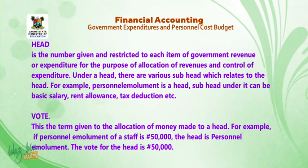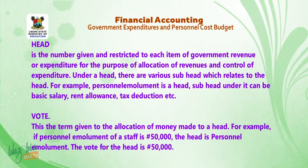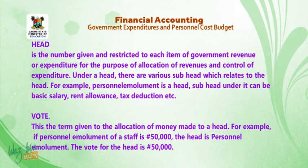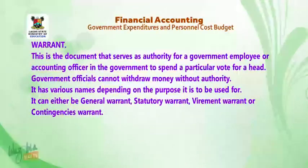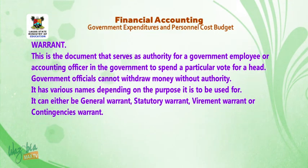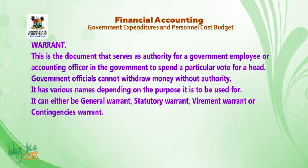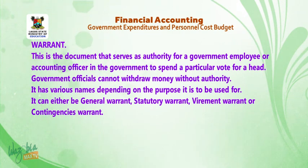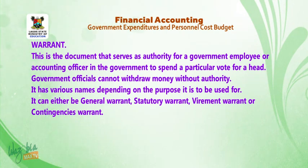Vote is the term given to the allocation of money made to a head. For example, if the personnel emolument of a staff is 50,000 Naira, the head is personal emolument and the vote for the head is 50,000 Naira. Warrant is the document that serves as authority for a government employee or accounting officer to spend a particular vote for a head. Government officials cannot withdraw money without authority. It can either be a general warrant, statutory warrant, virement warrant, or contingency warrant.